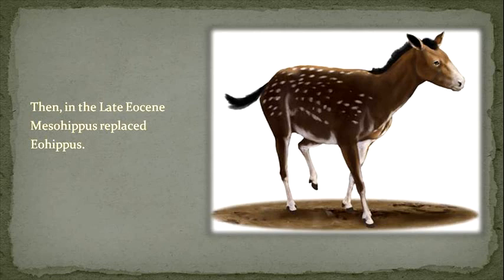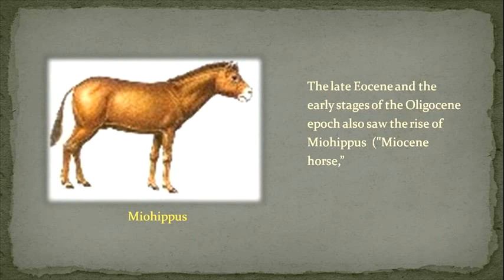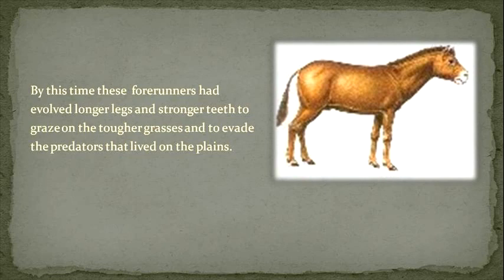Then in the late Eocene, Mesohippus replaced Eohippus. Mesohippus, or middle horse, lived in the late Eocene and early parts of the Oligocene epoch, 32 to 24 million years ago, when the climate of North America became drier and the forests became flatlands. The late Eocene and early stages of the Oligocene epoch also saw the rise of the Miohippus — the Miocene horse — even though it was extinct long before the Miocene epoch.